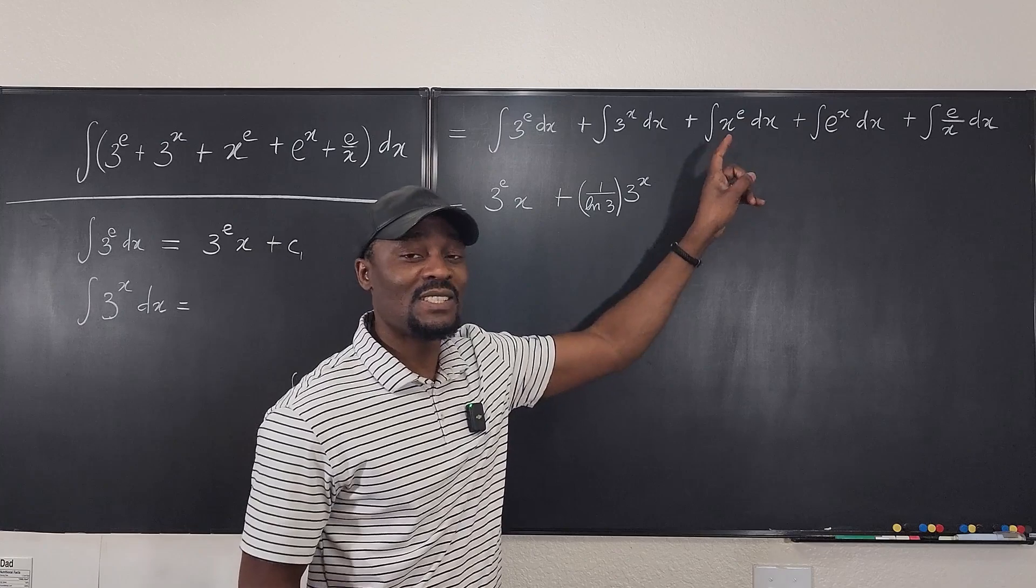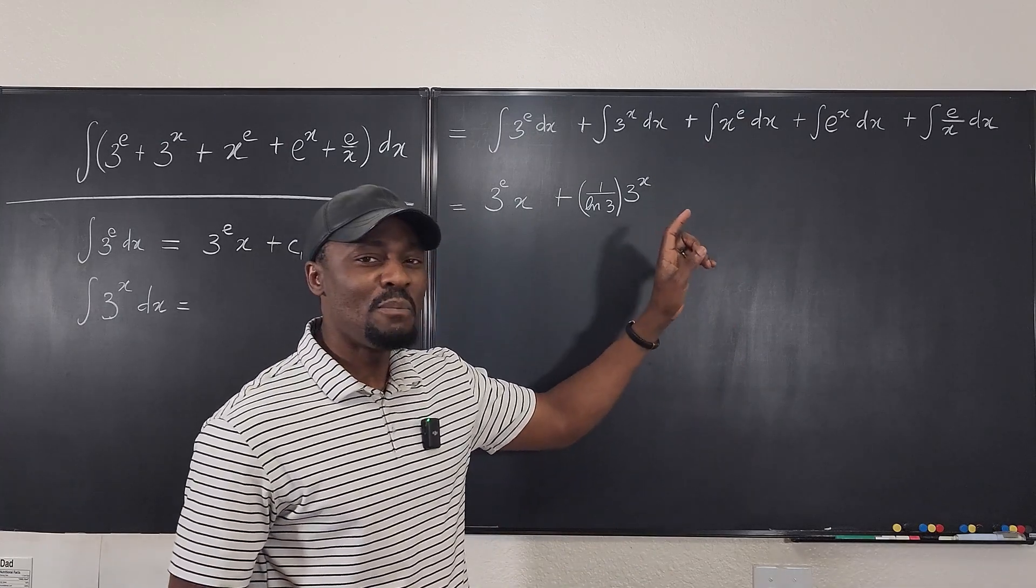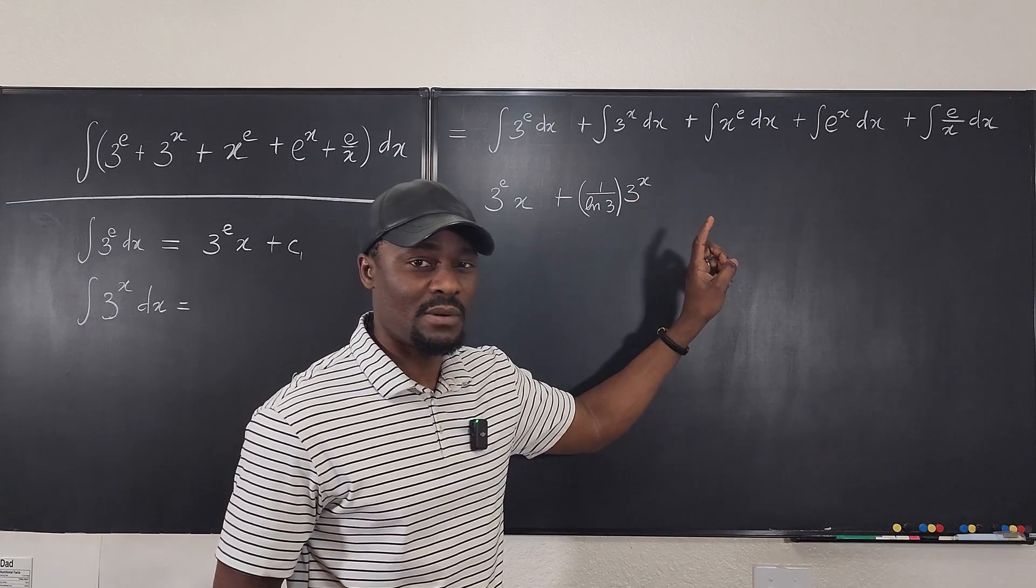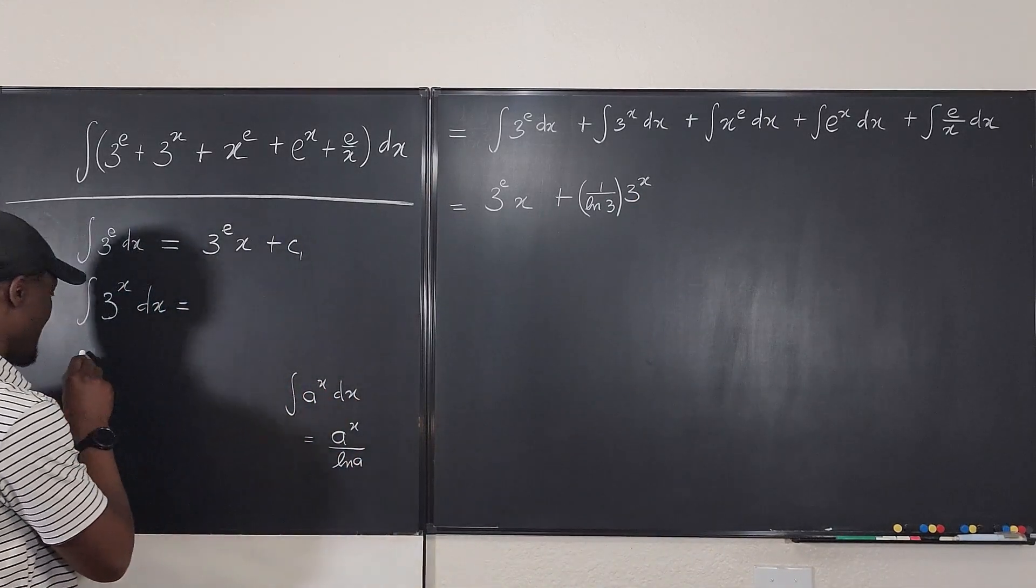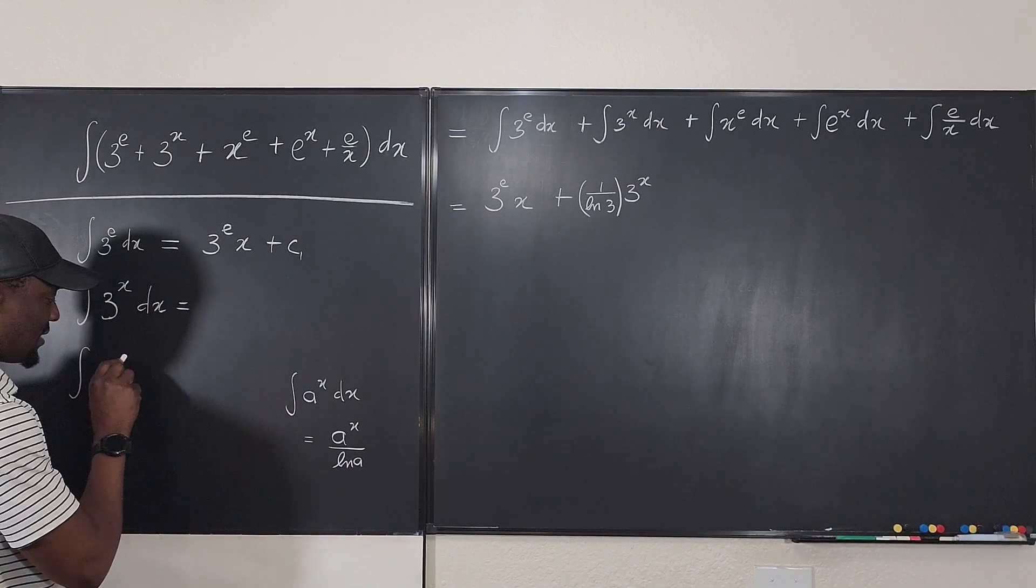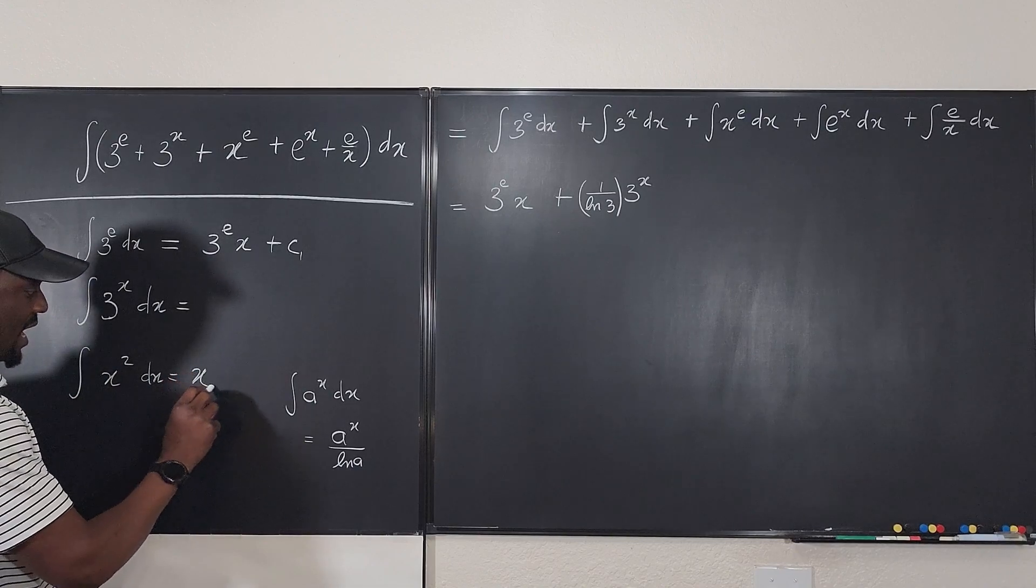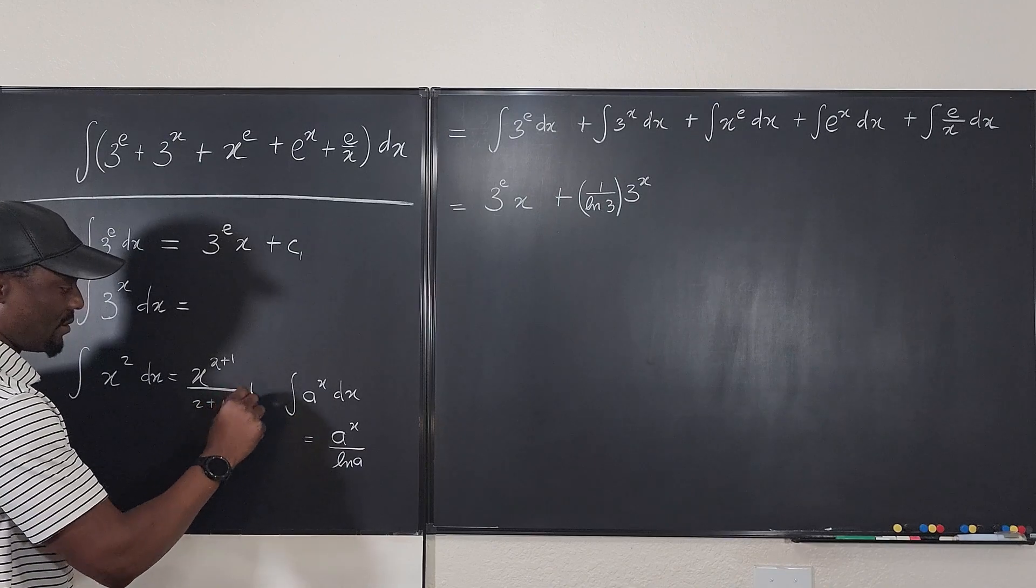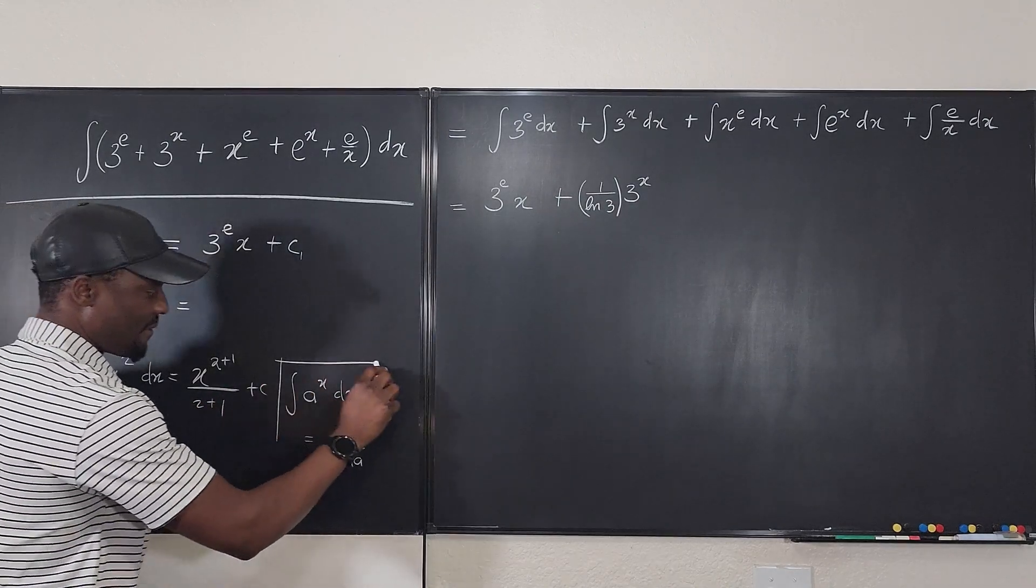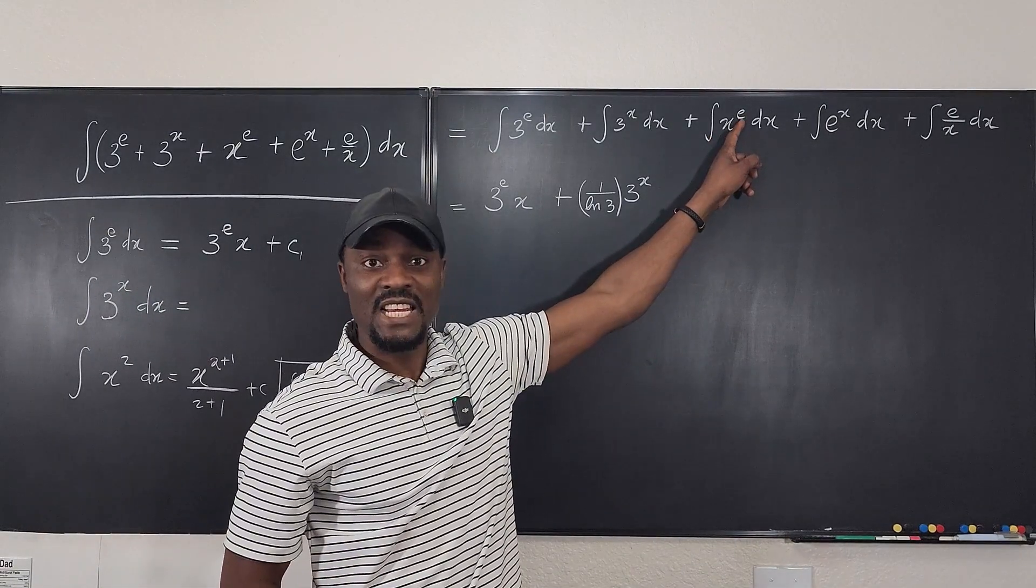Well, x to the e. This is the one that confuses students the most because remember that e is a number. So it's like saying x to the e. So let's look at this again. x to the second dx. Well, this integral is basically x to the, you have got to add something to this. So it's 2 plus 1 over 2 plus 1 plus c. It's the same thing we do here because this e is a number.